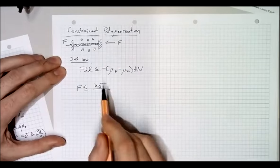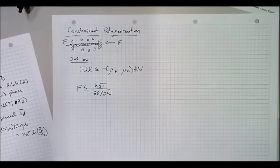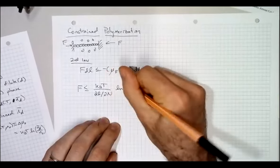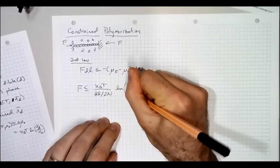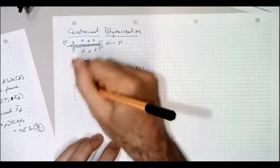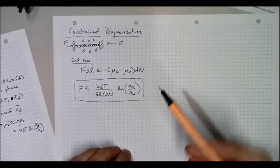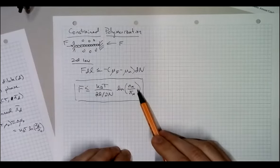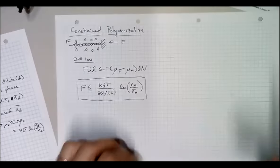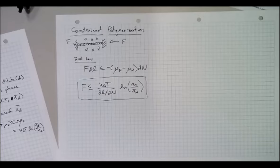Plugging in those expressions for a dilute system, you get this really nice expression for the force that this filament can exert during polymerization. It's got to be less than kT divided by dL/dN — basically how much the filament extends when you add a single monomer — times the log of the current concentration divided by the concentration when the filament and monomer are in equilibrium in the absence of an external force. The key point is: if your concentration equals the equilibrium concentration, the log of one is zero, so the filament can't do any work. But as concentration goes beyond equilibrium, the filament is capable of pushing and growing.